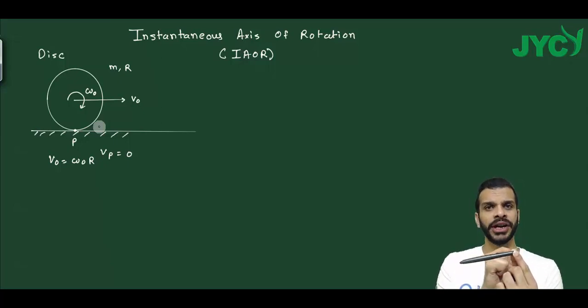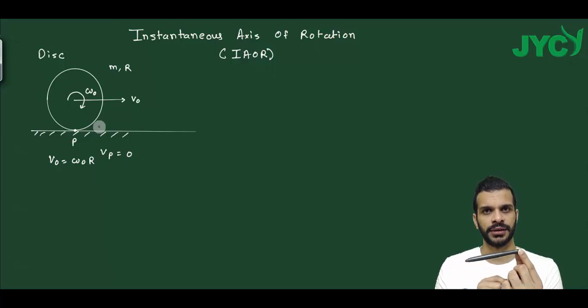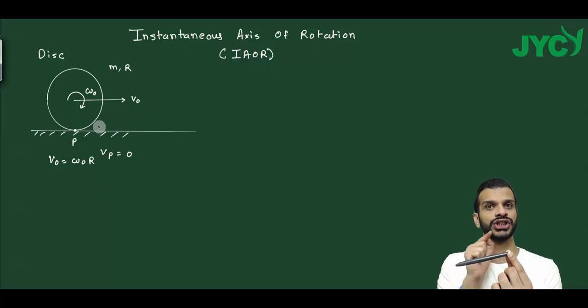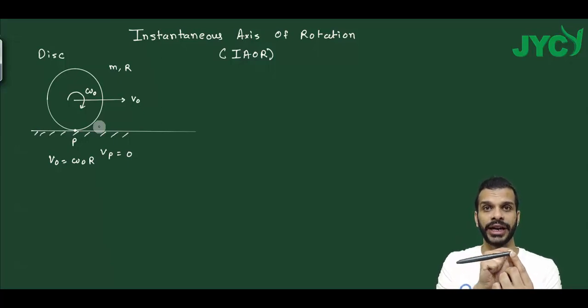This point P is my axis of rotation. So my axis of rotation is passing through this particular point P.